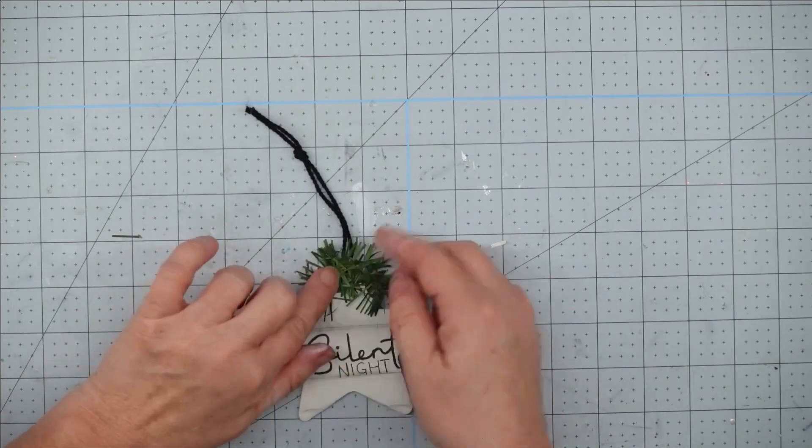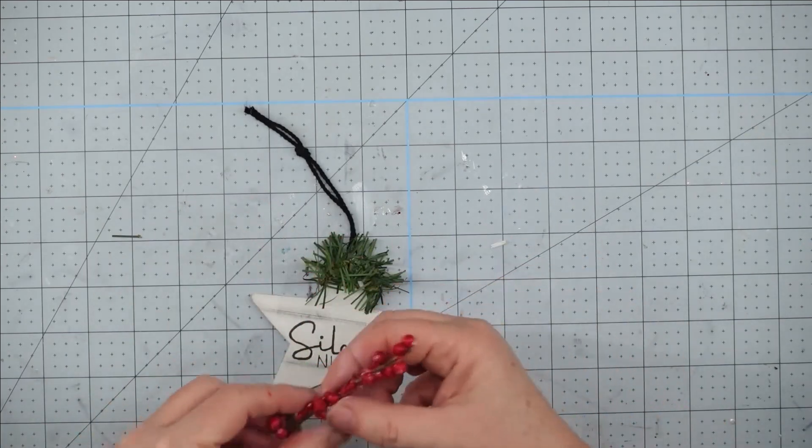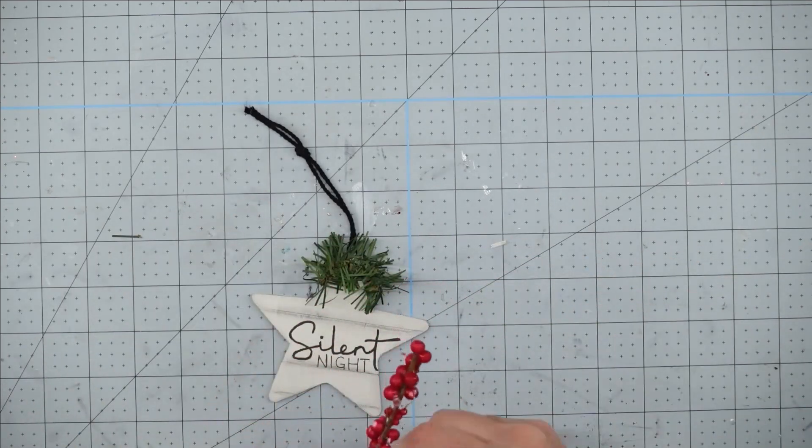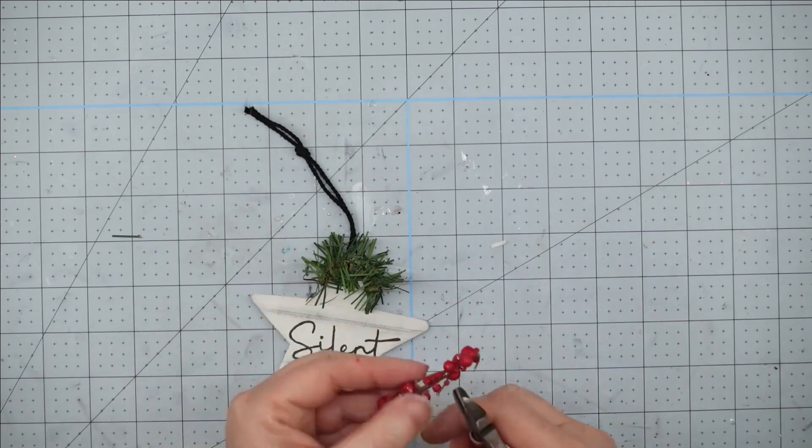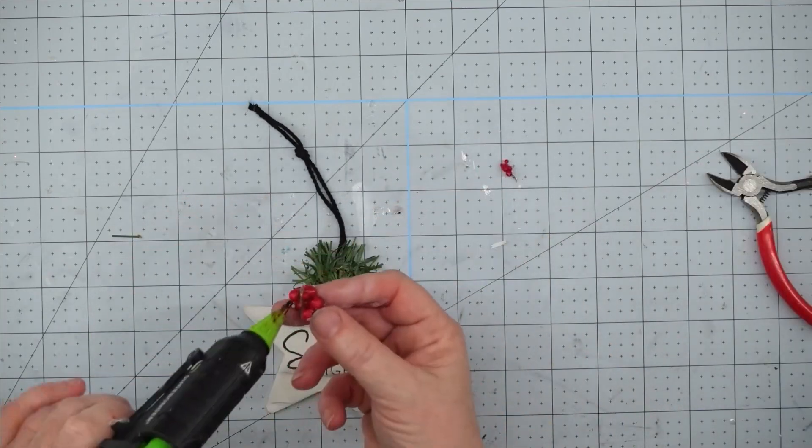The last thing I want to do is decorate it, so I used a little piece of greenery that I had left over from last year. I'm going to glue some of these little berries in the middle of that, and once you get this on, this project is complete.